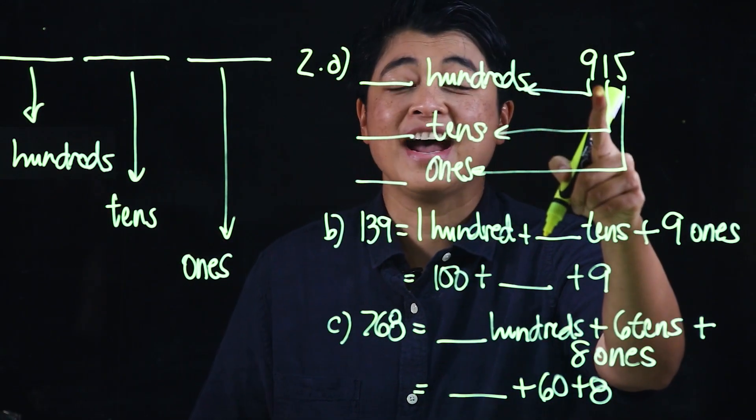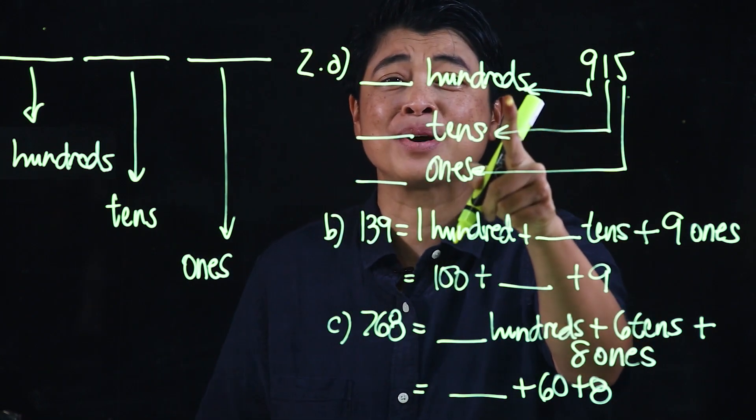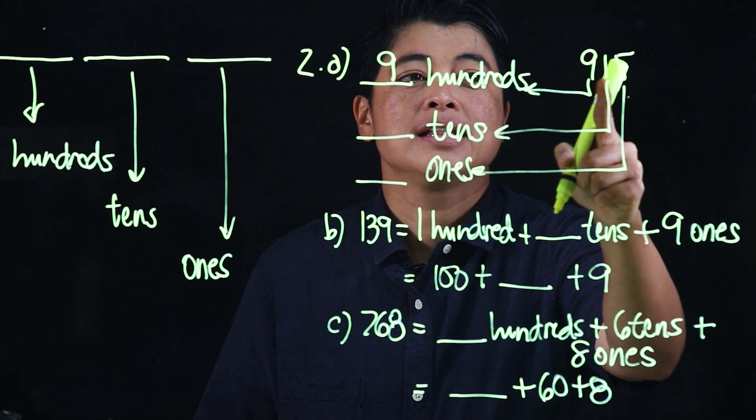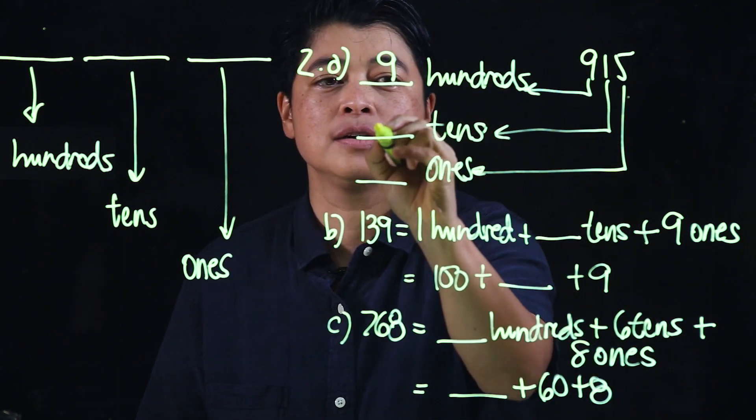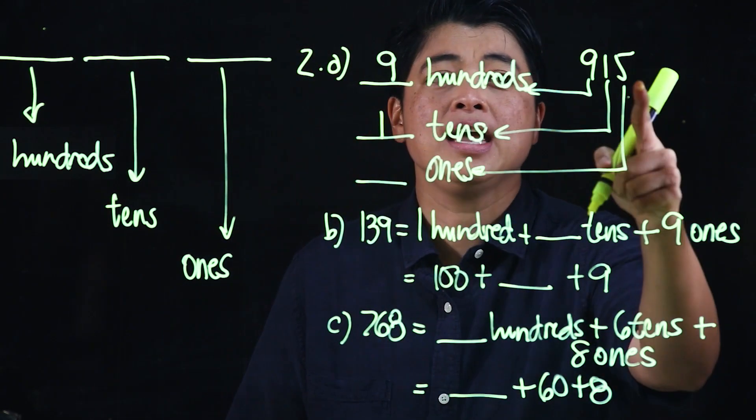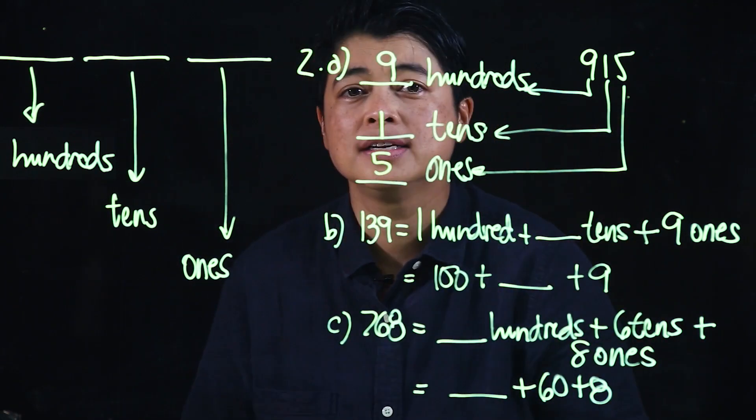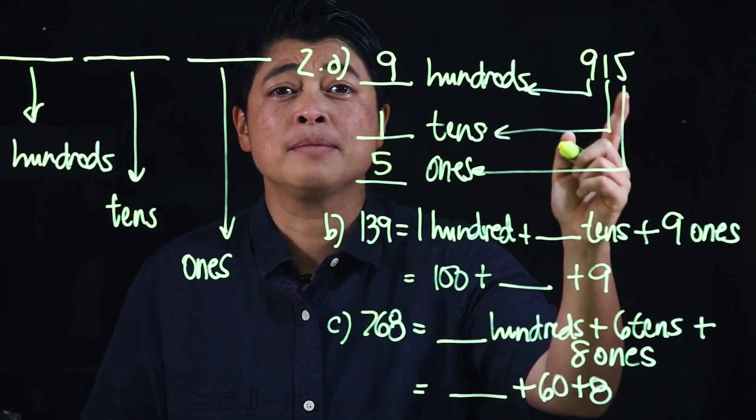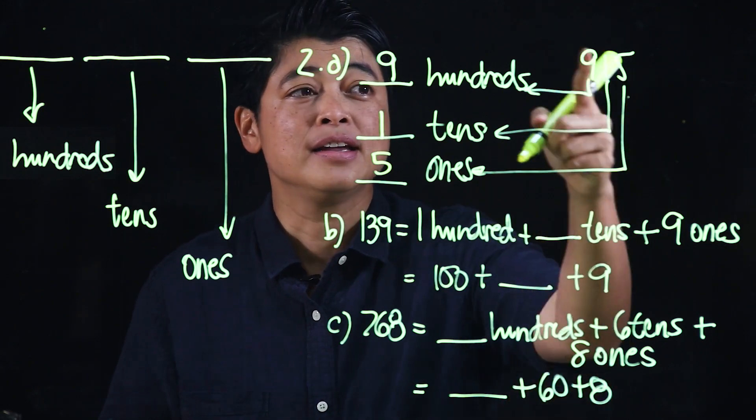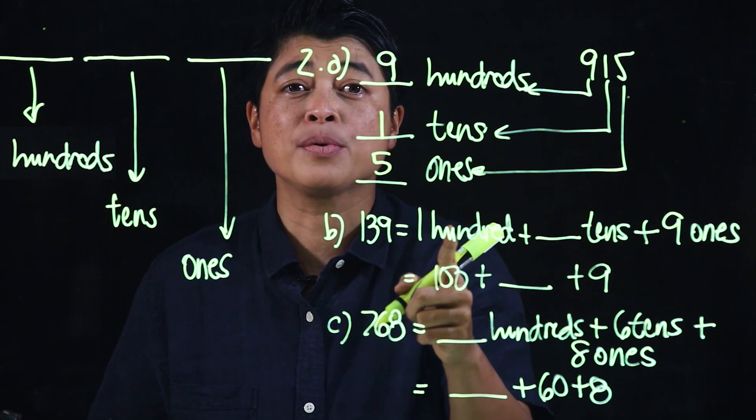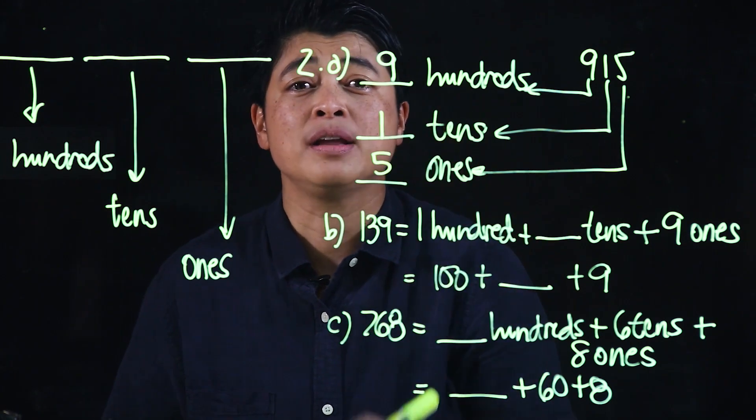The problem asks us to identify the number of hundreds—this is 9 hundreds, the number of tens which is 1 tens, and the number of ones which is 5 ones. Clearly in the pupil book it's easy because it's all in order, but once they start doing problems from the workbook it's not in order anymore, so they need to know how to read these.